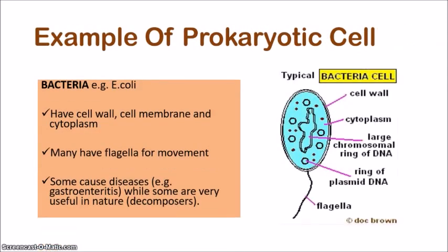Let's look a little more closely at prokaryotic cells. The common example is bacteria. Bacteria have a cell wall, a cell membrane, and a cytoplasm, along with some additional features. They often have flagella, which are useful for movement — like the little tail that helps bacteria move through wherever they're going, whether that's in our bodies, in the soil, or in the water.